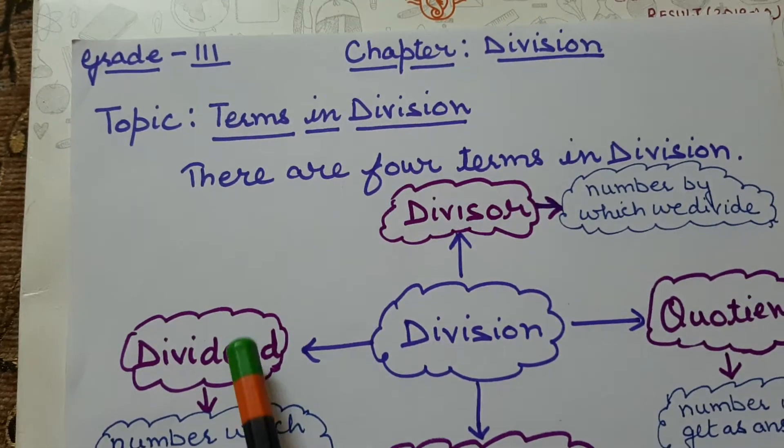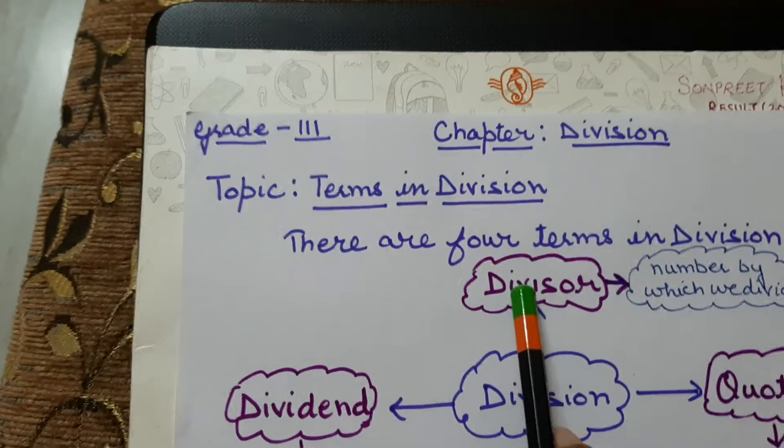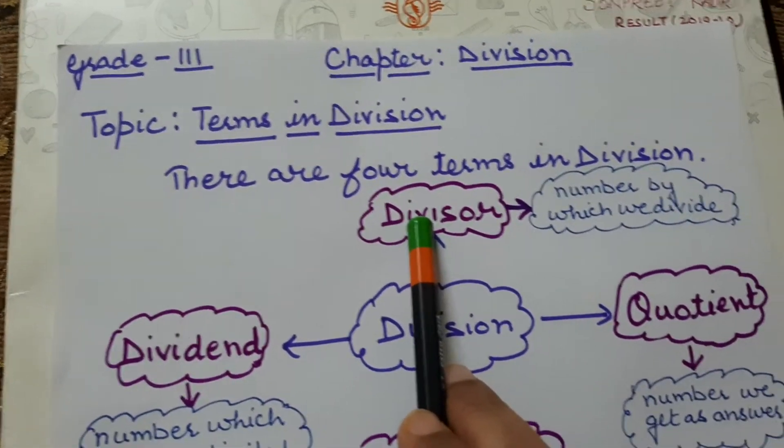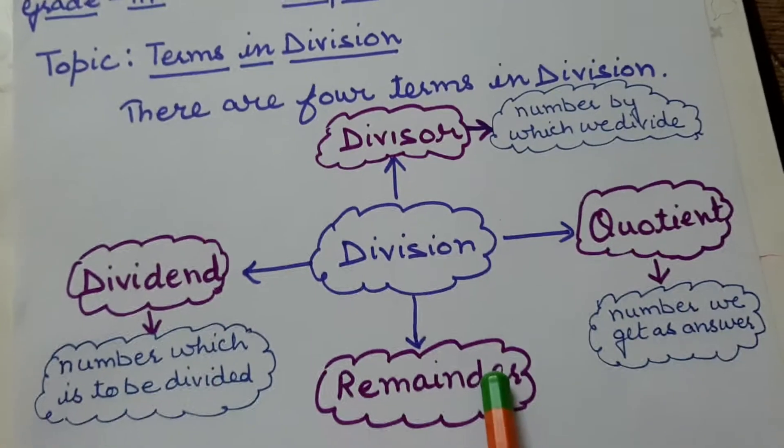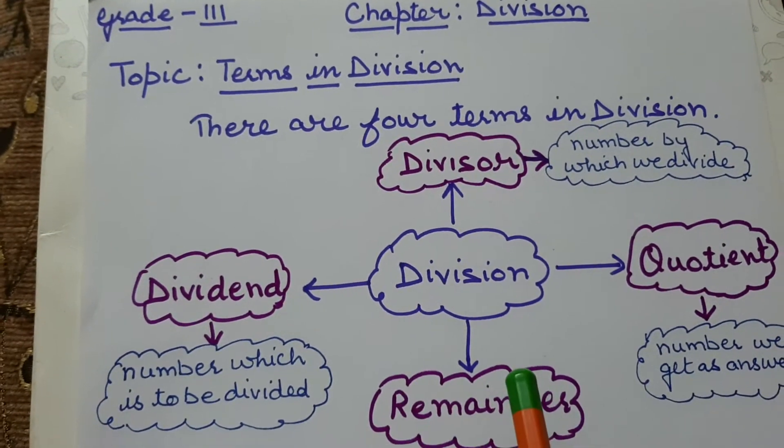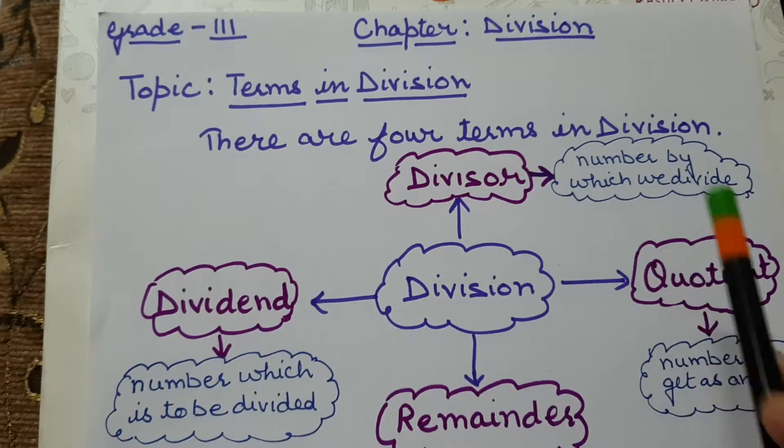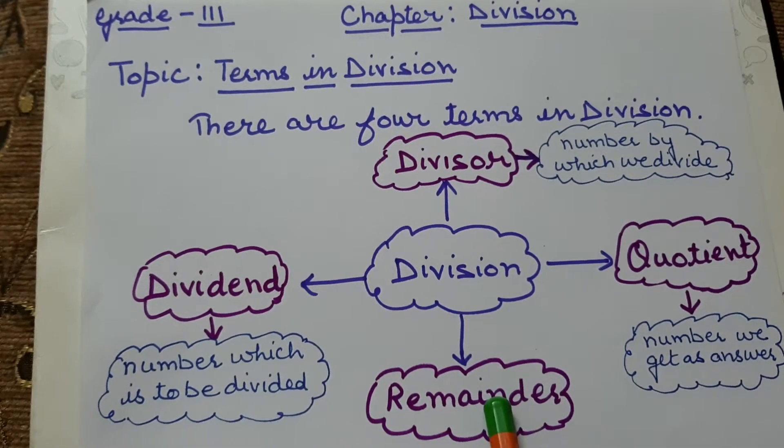So first is dividend, second is divisor and third is quotient, fourth is remainder. In this topic we will use only these three terms. This fourth term we will use in next chapter.